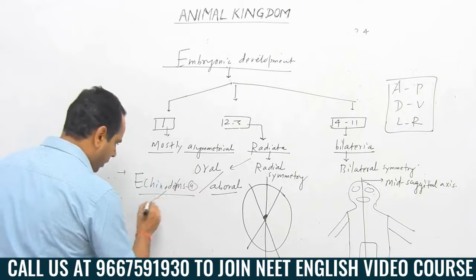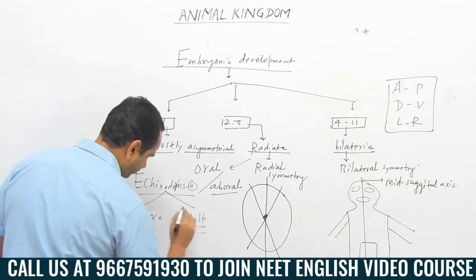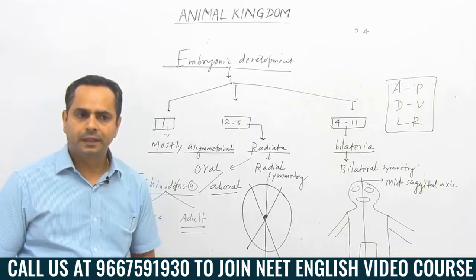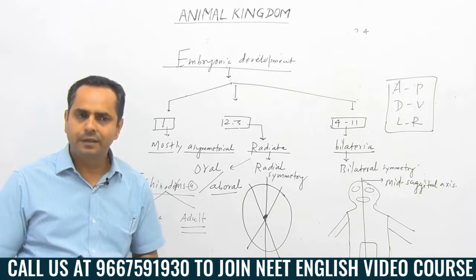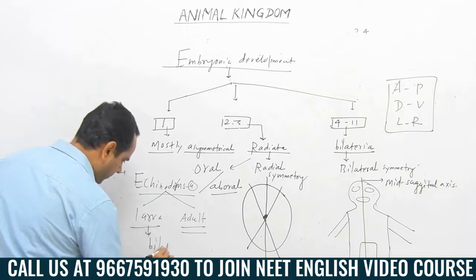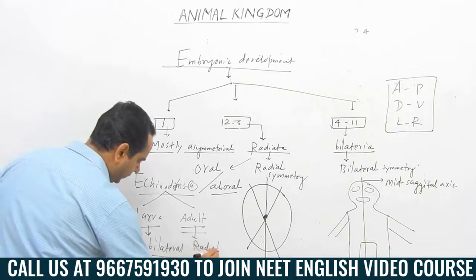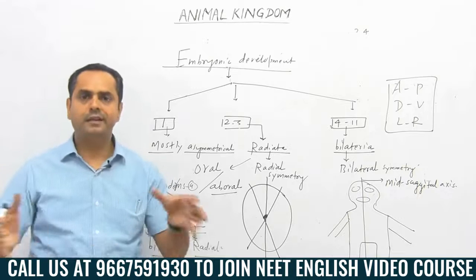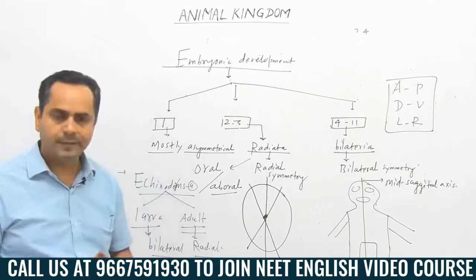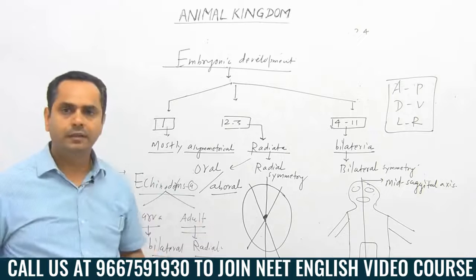In echinoderms, if we talk about their larvae and their adult structure: the larva is very much active and has an active mode of life, so the larval symmetry is bilateral. But the adult develops radial symmetry. So we can say echinoderms are animals with dual symmetry — larvae with bilateral symmetry and adult with radial symmetry.